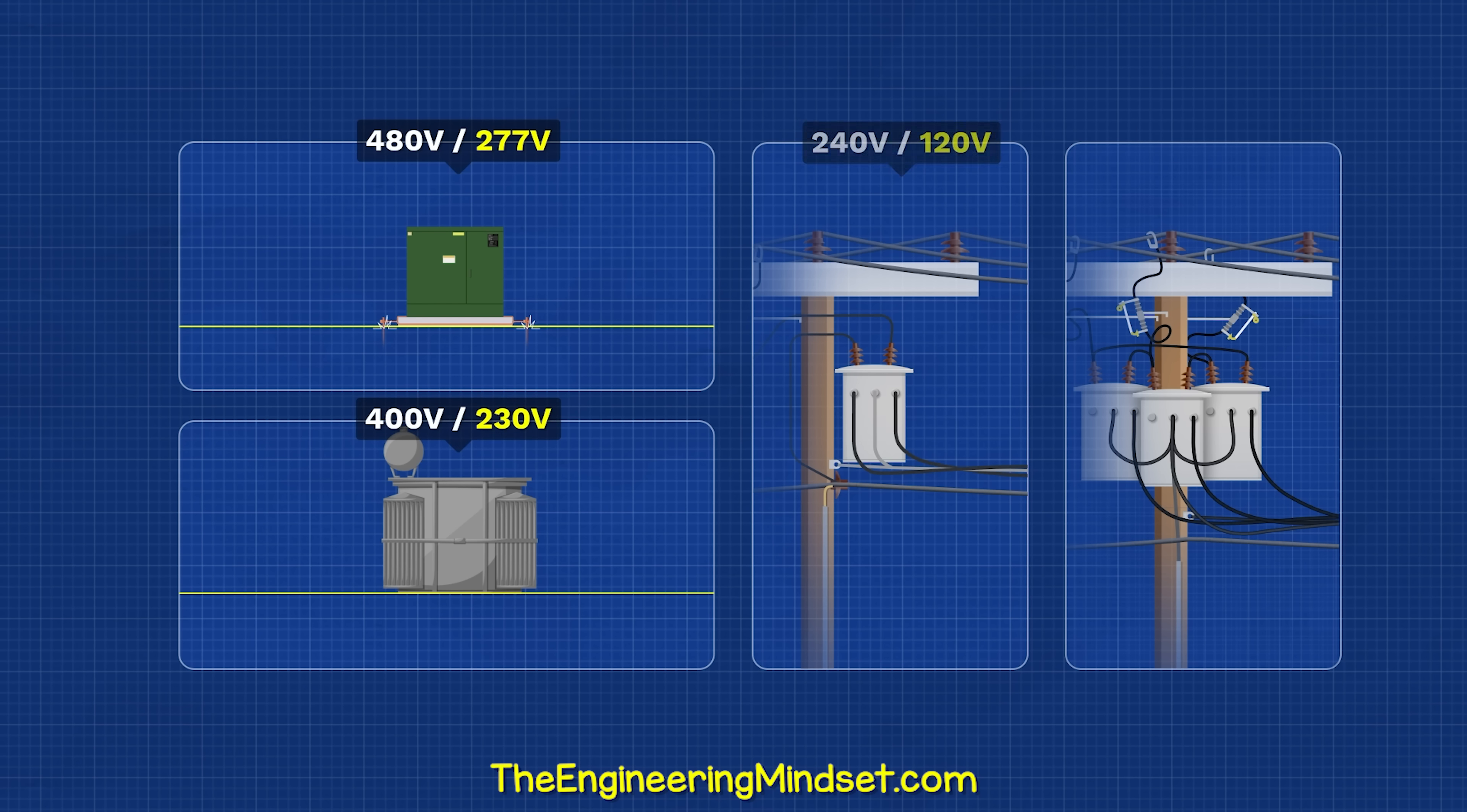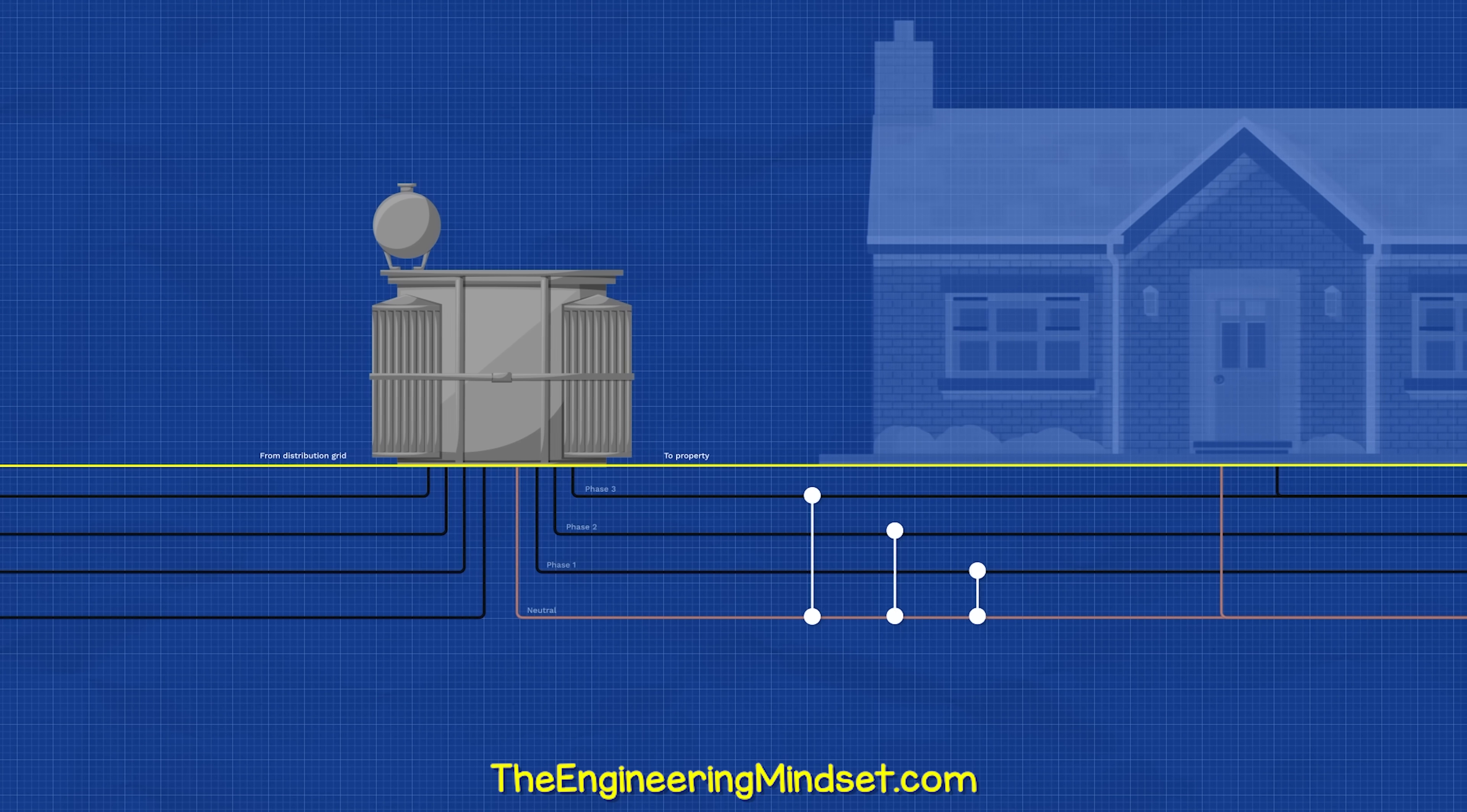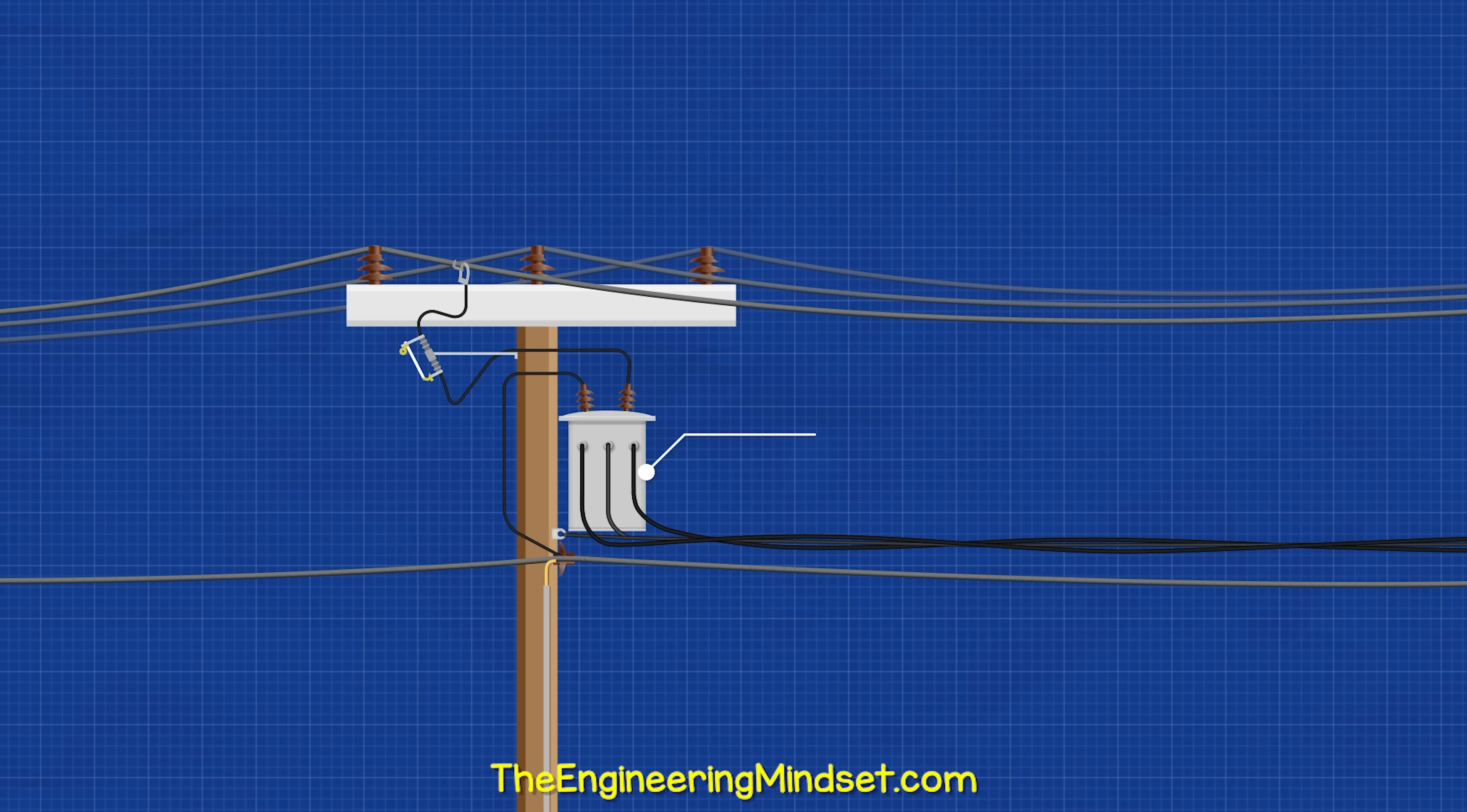The local distribution transformer is designed to provide different voltages around the world depending on the local regulations. In the UK and Europe, properties are typically provided 230 volt single phase or 400 volt three phase, which will also provide 230 volt single phase.